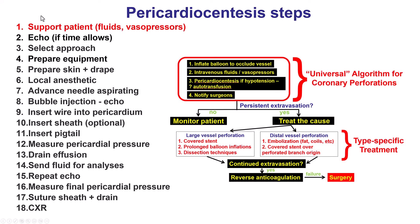Starting with the first step, which is to support the patient — especially important in patients who have perforation and tamponade. These are the four universal steps in the management of coronary perforation: inflate a balloon to occlude the vessel, provide fluids and vasopressors if needed, do pericardiocentesis if the patient develops hypotension, and call the surgeon in case emergency surgery is needed.